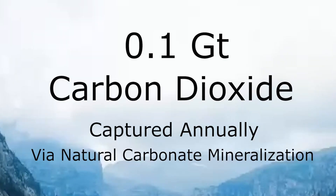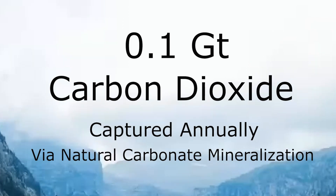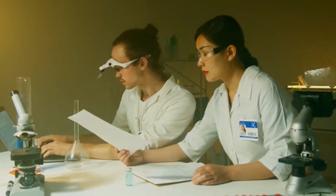It's estimated that 0.1 gigatons of carbon dioxide is captured annually through this process. Thus, it would take thousands of years to offset current anthropogenic emissions as carbonate mineralization naturally functions. But the urgency to clean up our air before it's too late is encouraging chemists and geologists to figure out how to speed up this process.